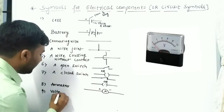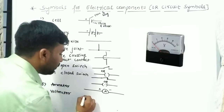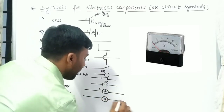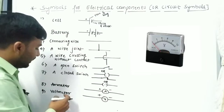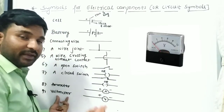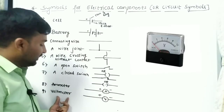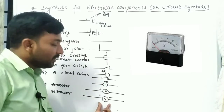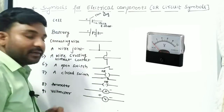Next is the voltmeter. The voltmeter symbol is a circle with the letter V inside. It is the device which measures the potential difference between two points in a circuit.